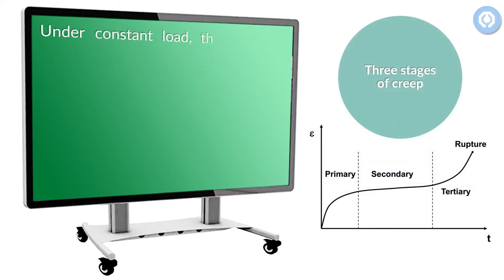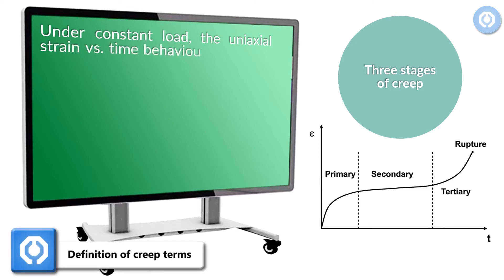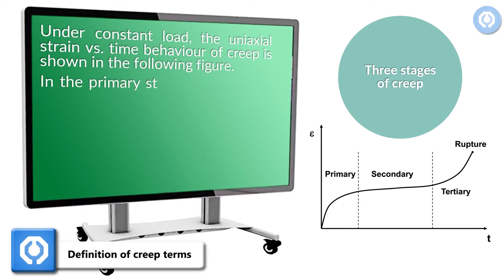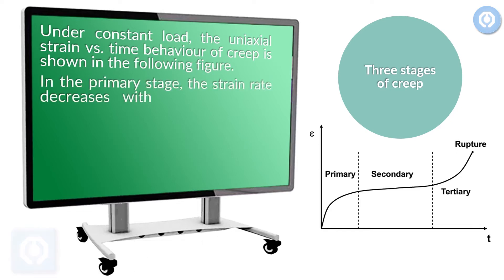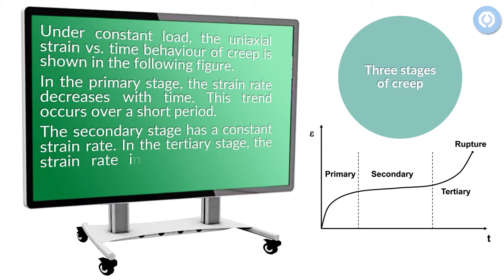Under constant load, the uniaxial strain versus time behavior of creep is shown in the following figure. In the primary stage, the strain rate decreases with time, and this trend occurs over a short period. The secondary stage has a constant strain rate. In the tertiary stage, the strain rate increases rapidly until failure.